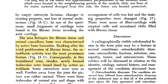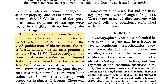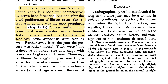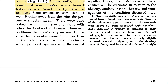The area between the fibrous tissue and the normal cancellous bone was characterized by active bone formation following vivid proliferation of fibrous tissue. Osteoblastic activity was the most prominent feature, and newly formed trabeculae were found lined by active osteoblasts — so keep that in mind.